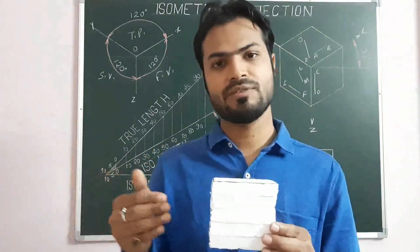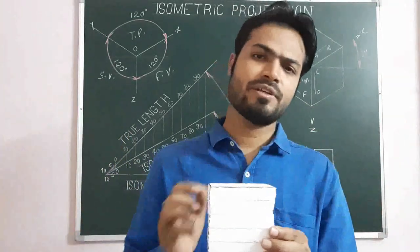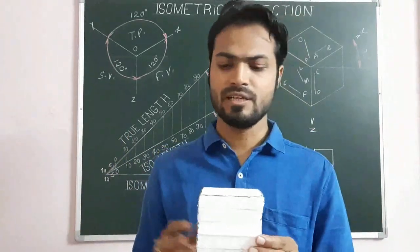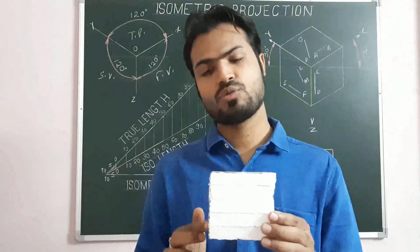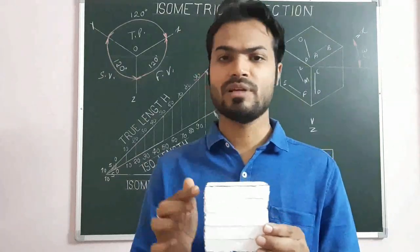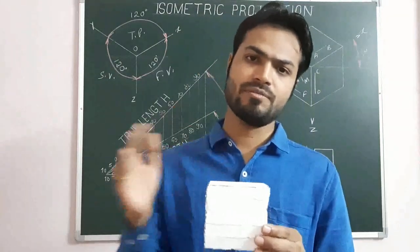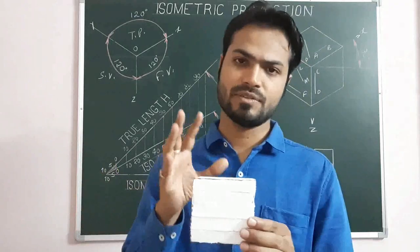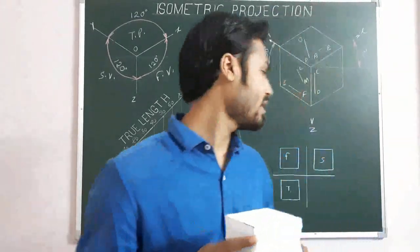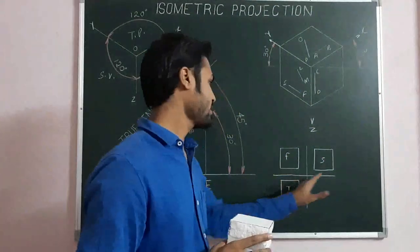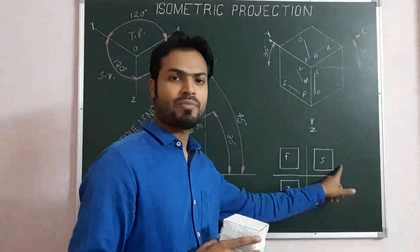Similarly, the side view — preferably from the right side, or you can observe it from the left side — will again be a square of size A by A. So in total, all three views — front view, top view, and side view of this cube — are the same: all squares of size A by A.